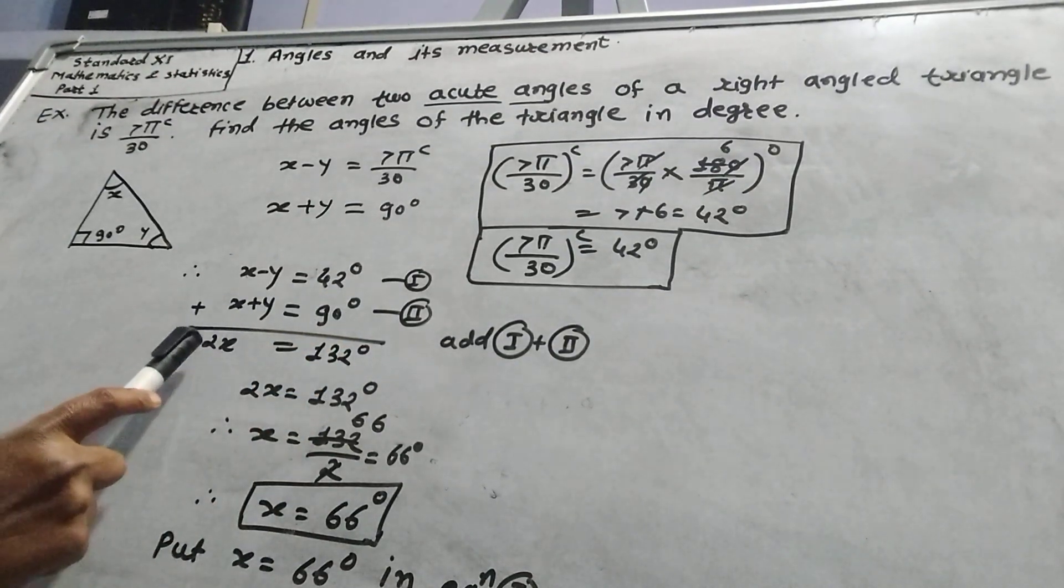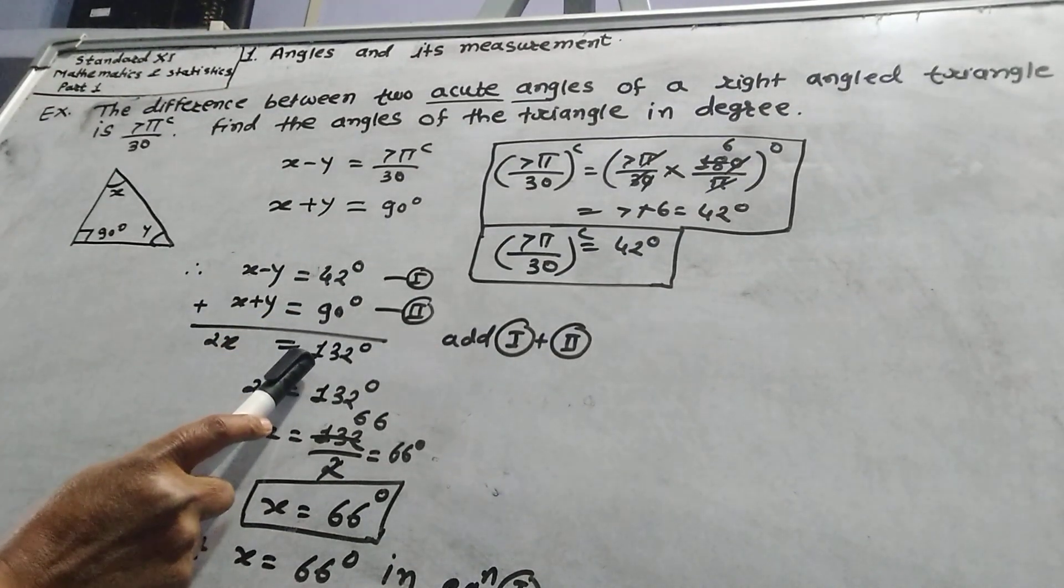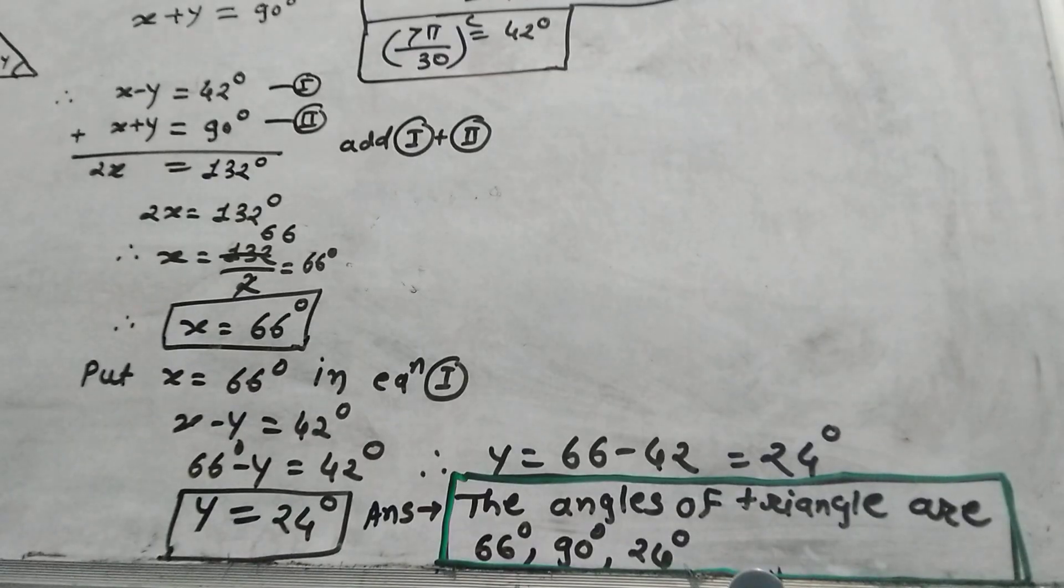Now add these two equations. x plus x equals 2x, which equals 42 plus 90, equals 132. Therefore, x equals 66 degrees.